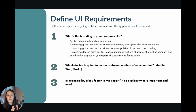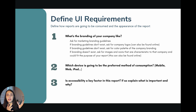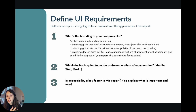The second question is: which device is going to be the preferred method of consumption? Is it mobile? Is it web? Is it an iPad? Try to understand and find the answer to this. And the last question is about accessibility — is accessibility a key factor in this report, and if so, can the stakeholders explain what is important and why in terms of accessibility?